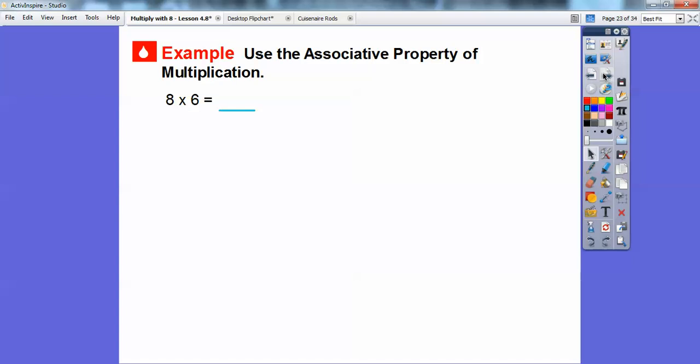Here's another way: we can use the Associative Property of Multiplication. 8 × 6 is the same as replacing eight with 2 × 4. Remember, 8 = 2 × 4. So we can use the Associative Property. Instead of grouping 2 × 4 together, which is our eight,